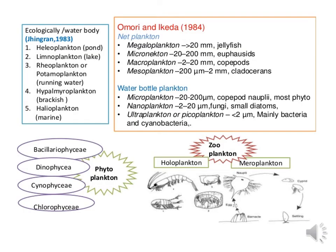There are two types of planktons available as food material to different fishes: zooplanktons and phytoplanktons. Zooplanktons are further divided into holoplanktons and meroplanktons. Holoplanktons are planktonic organisms that live in the water column and cannot swim against a water current. Meroplanktons are planktonic organisms that spend part of their life cycle in the benthic zone of a water body. Phytoplanktons are also called diatoms. Phytoplankton have different types: Bacillariophyceae, Dinophyceae, Cyanophyceae, and Chlorophyceae.